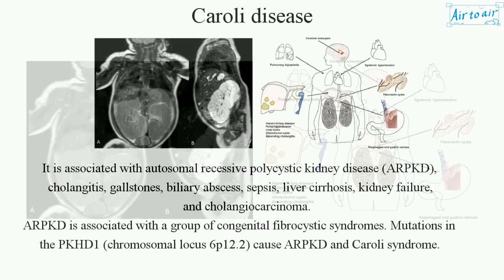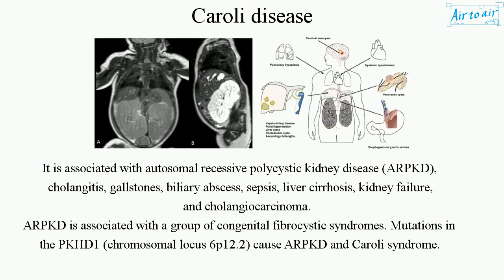Caroli disease is associated with autosomal recessive polycystic kidney disease (ARPKD), cholangitis, gallstones, biliary abscess, sepsis, liver cirrhosis, kidney failure, and cholangiocarcinoma.